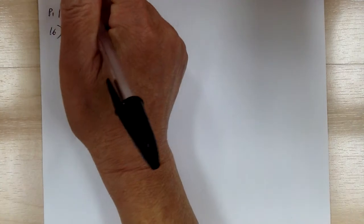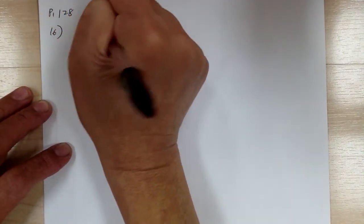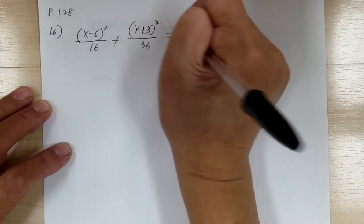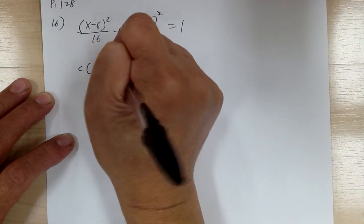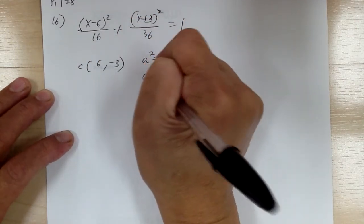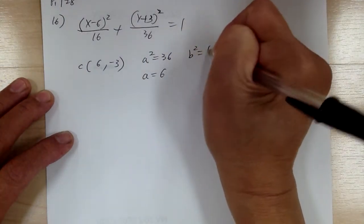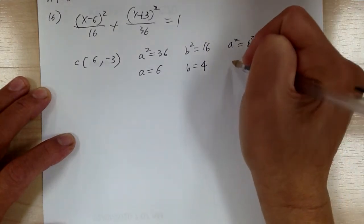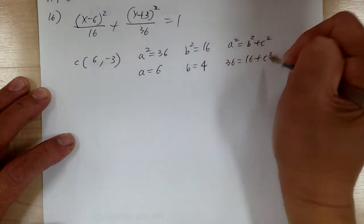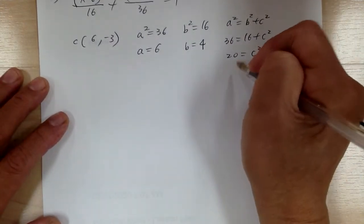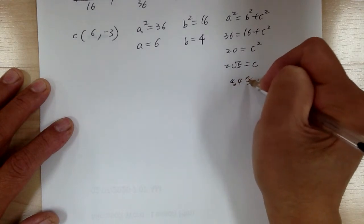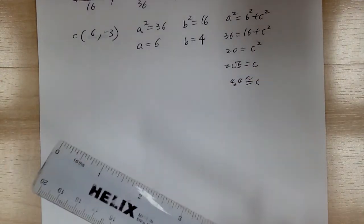Let's go to number 16. The center is at (6, -3). A squared equals 36, so a equals 6. B squared equals 16, so b equals 4. A squared equals b squared plus c squared: 36 equals 16 plus c squared, so c squared equals 20, c equals 2√5, about 4.4.